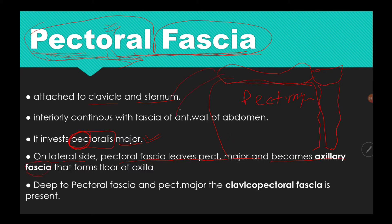On the lateral side, pectoral fascia leaves the pectoralis major and becomes the axillary fascia. The axilla is the armpit area. On the lateral side, the pectoral fascia becomes axillary fascia, which forms the floor of the axilla.